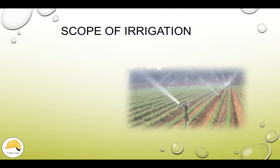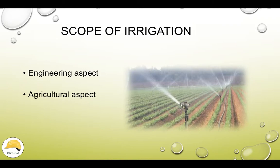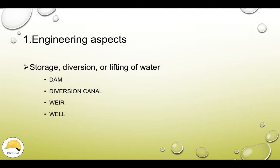This is the scope of irrigation. We are going to describe two aspects: engineering aspects and agricultural aspects. Let's look at the engineering aspects. First: storage, diversion, or lifting of water. We need to store the water using any suitable method — maybe a dam, diversion canal, weir, well, etc. This is the first phase of irrigation.